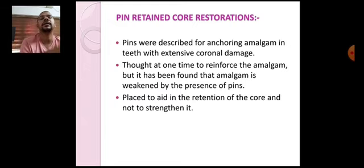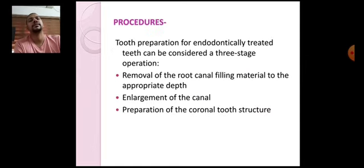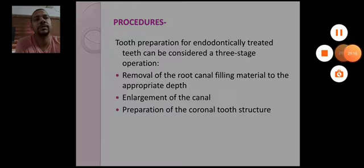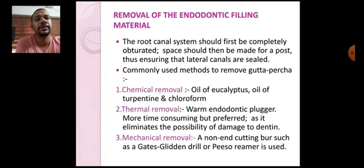So three to four pins are acceptable, placed only on the line angles and not in any other areas. Pins are placed to aid in retention of the core and not to strengthen the amalgam core — keep this in mind. That is all about today's lecture. In the next class, I will explain different procedures in post and core placement from beginning to end. Thank you.